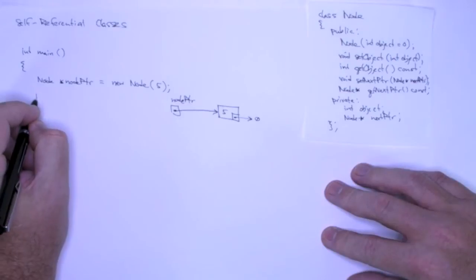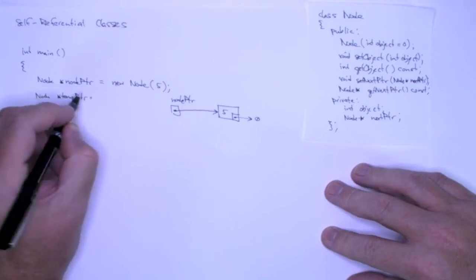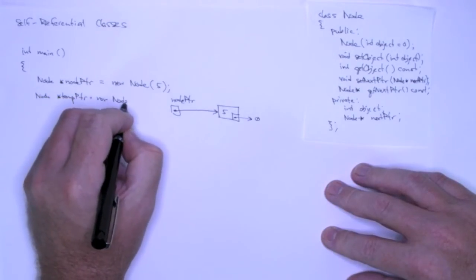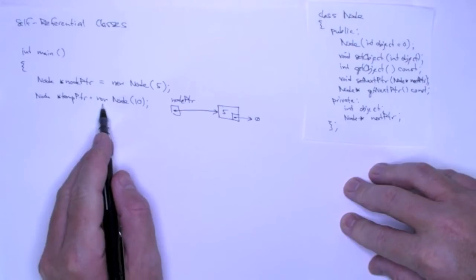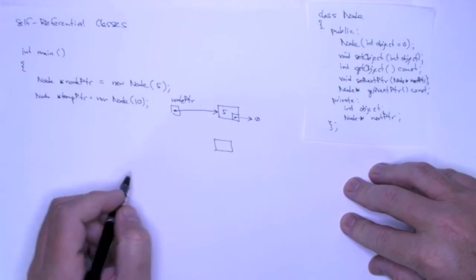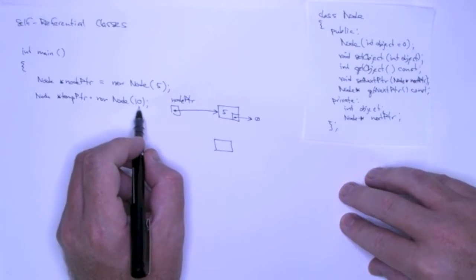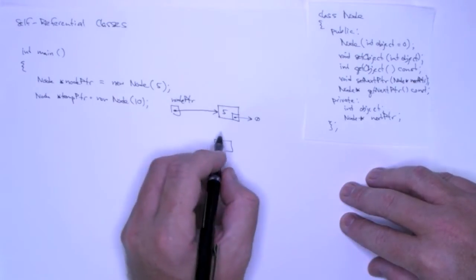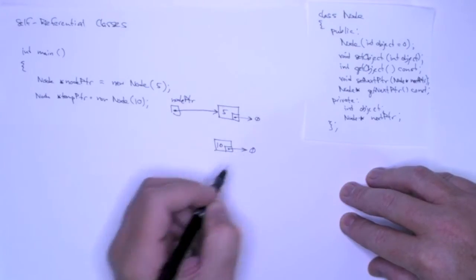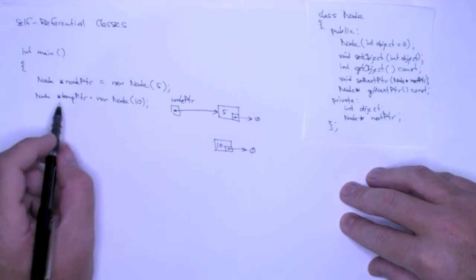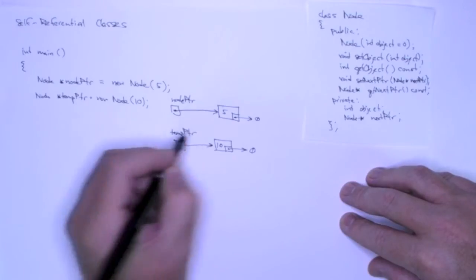I'm going to do almost the same thing using temp pointer, and this time I'll create a new node with ten. The runtime environment allocates memory for an integer and a pointer, then we execute the constructor. The constructor sets the private data member to ten and makes the next pointer point to null. New returns the address, which we store in temp pointer.